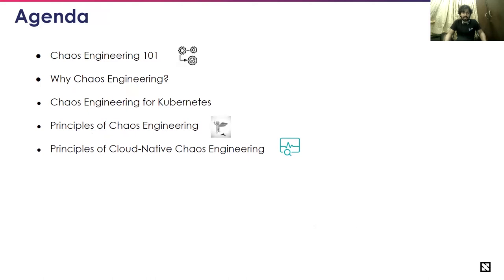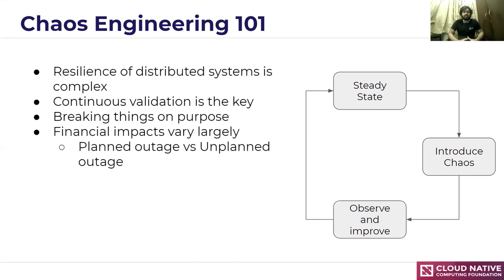Moving on to the agenda: we'll briefly talk about chaos engineering — a Chaos Engineering 101 — why chaos, and why do you need to learn chaos or how chaos engineering helps you. We'll cover chaos engineering for Kubernetes and cloud-native systems, why we need chaos engineering for Kubernetes, and then roughly talk about the principles of chaos before defining the principles of cloud-native chaos engineering.